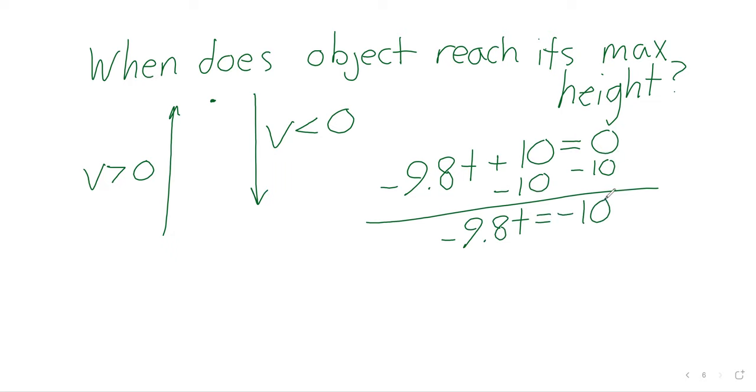So negative 9.8t is negative 10. t is 10 divided by 9.8, really negative 10 divided by negative 9.8, but our negative signs are canceling. And again, just typing this into the calculator, 1.02, which is just what we saw on Desmos. And time is being measured in seconds here, 1.02 seconds. Is everyone with me so far? Any questions?